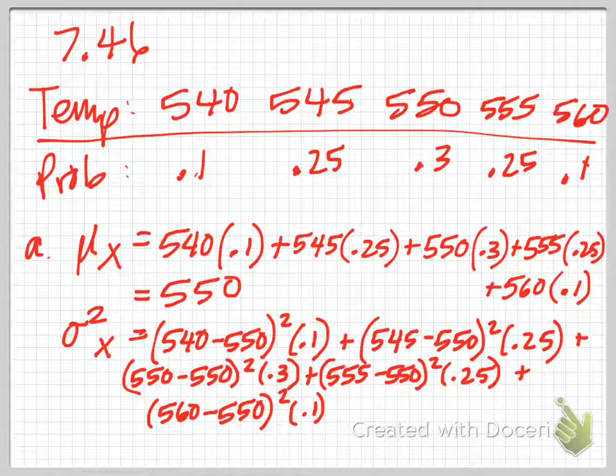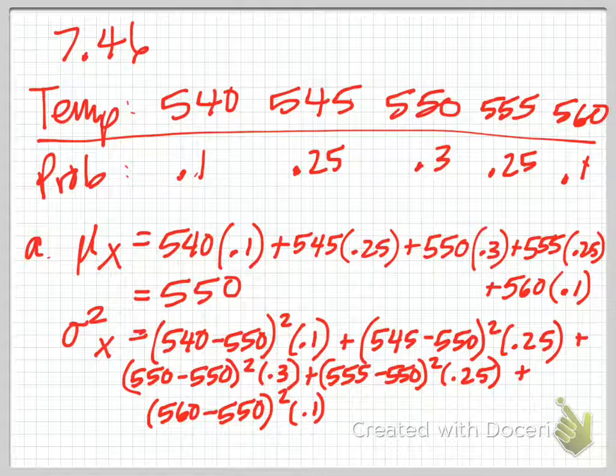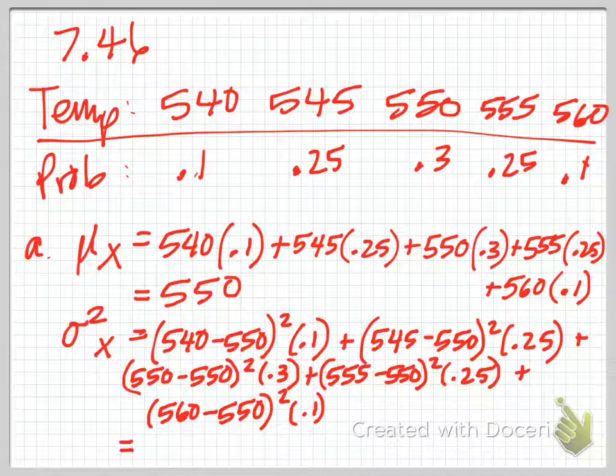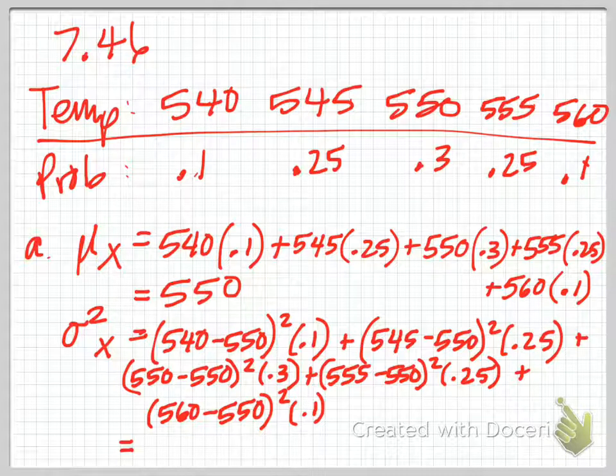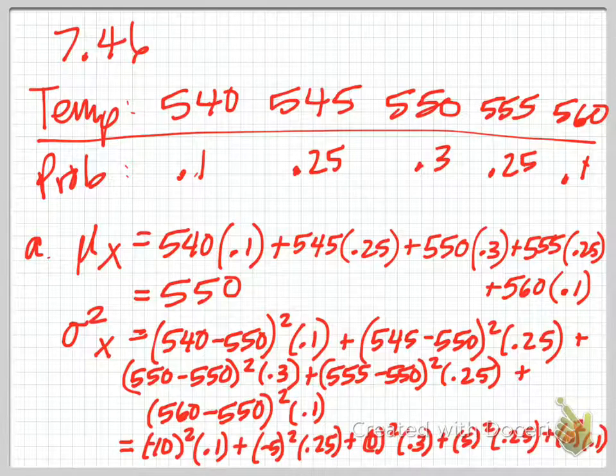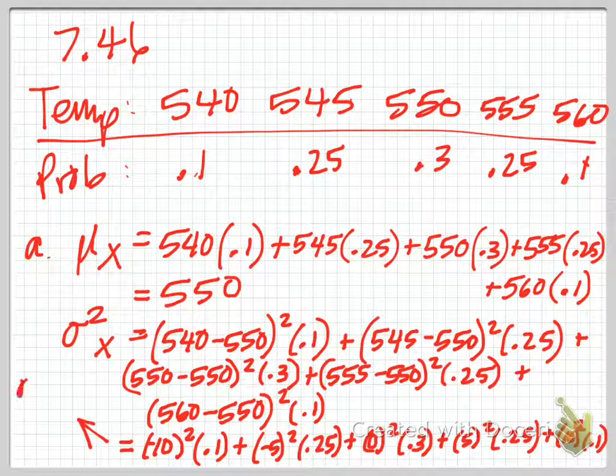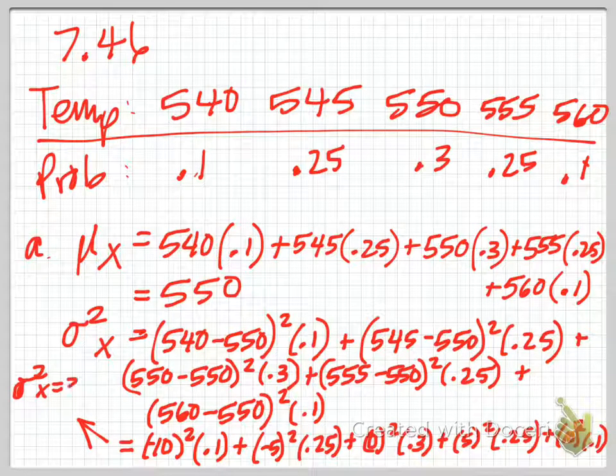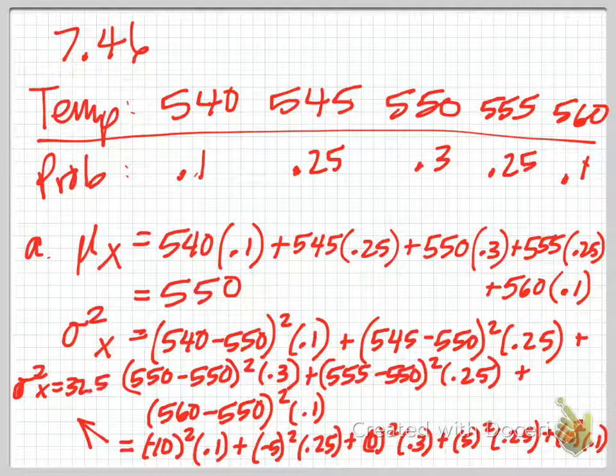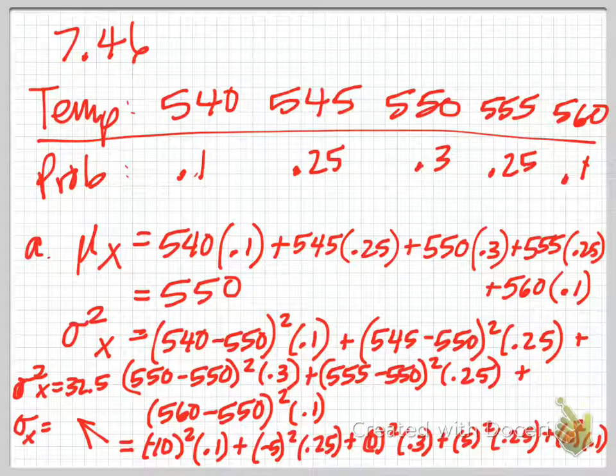I've got all my outcomes of x inputted here. I've got my mean is 550 consistently across there. On this next step, I'm going to do the subtraction and the squaring, and then after I pause it, I'll do the multiplying. We'll just see what our variance is, which will then square root to get the standard deviation, which is what they asked for. I did this calculation here on the bottom of the screen, and I got the variance to be 32.5. When I go ahead and square root that, then the standard deviation is 5.7, roughly.